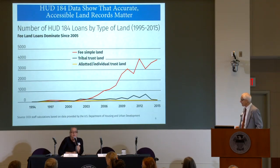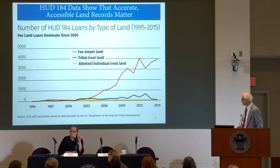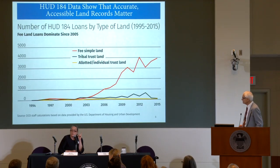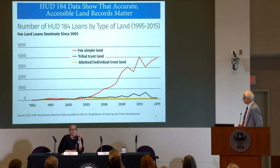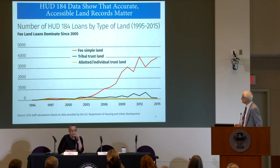That's a really important figure to focus on. In cumulative form it looks even worse — 90% of 184 loans since inception have been on fee land, and that's even counting the earlier period when proportionally more were still on trust land.